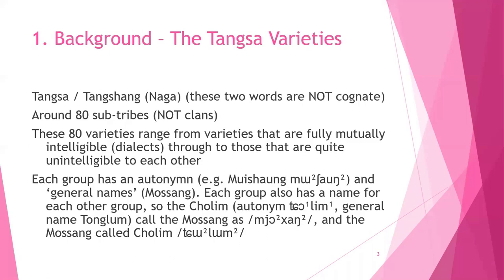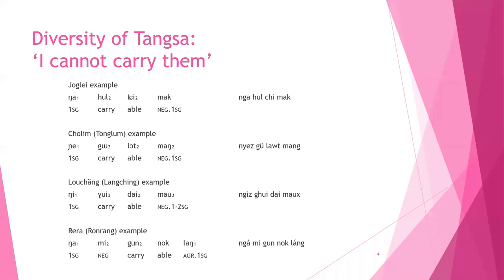The Tangsa languages represent a considerable diversity of languages, not all mutually intelligible. These are just some sentence examples of the same rather simple sentence in four varieties of Tangsa, with a possible romanized orthography on the right-hand side at different levels of community approval. As you can see, these languages are not exactly mutually intelligible — there's a lot of difference between them.